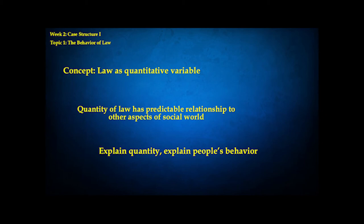The idea here is that if you explain the quantity of law, you explain the behavior of anyone involved in bringing law into the case. So a case that's conducive to a large quantity of law — whatever social factors make that so — explains why someone would call the cops rather than not. But it also explains why the cops would make an arrest, or why the prosecutor would choose to prosecute rather than drop the charges. The behavior of all these people — the victim, the police, the prosecutor, the judge or jury — they're all aspects of the quantity of law.